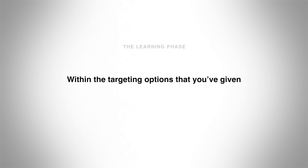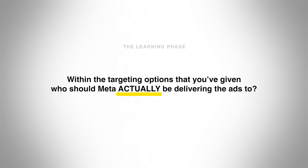So let's say you're running a sales campaign optimizing for purchases. Meta, assuming you've got your pixel set up correctly, can see who is buying your products based on your advertising and who isn't, and they use that information to adjust how your campaign is delivered. That includes things like within the targeting options you've given, who should they actually put your ads in front of — because there's probably going to be a small subsection within your targeting that produces the best results. Meta's going to try and find those in the learning phase.